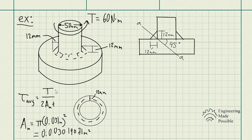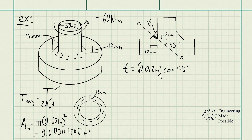Now we need the thickness along section AA. Since the problem states that the critical failure section is along section AA, we use trigonometry: the fillet weld dimension is 12 mm and the weld throat is at 45°, so t = 0.012 m × cos(45°), since t is the adjacent side and the 12 mm leg is the hypotenuse.